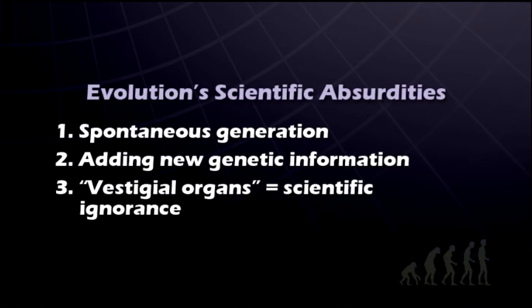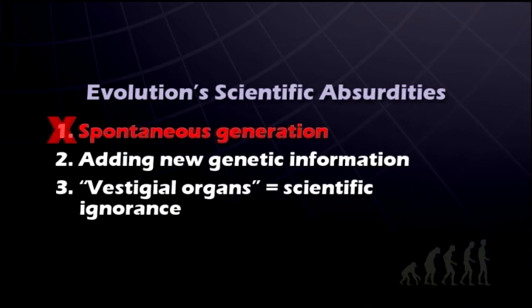We've shown that true science has thoroughly refuted the theory of evolution in several areas. First, we talked about spontaneous generation, the idea promoted by evolutionists that somehow life could spontaneously arise from non-life. We've shown that just what we now know about the incredible complexity of life, even the simplest life forms being more complicated than anything humans have ever been able to create, means that saying those simple life forms could somehow spontaneously form is scientifically absurd.